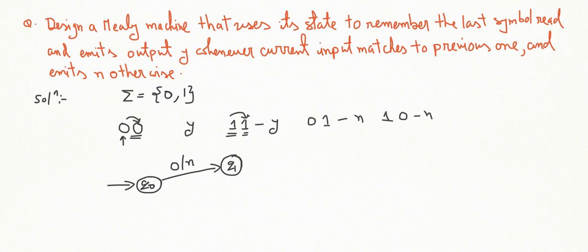Similarly, from Q0, when we read first 1, output will be N and we move to Q2.